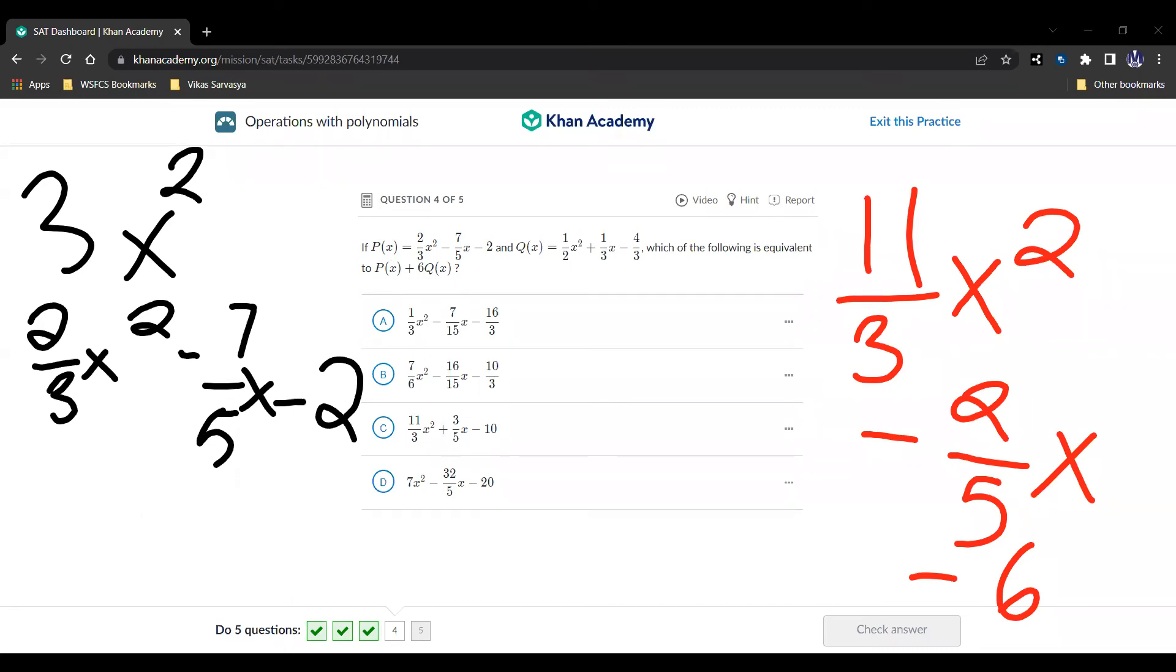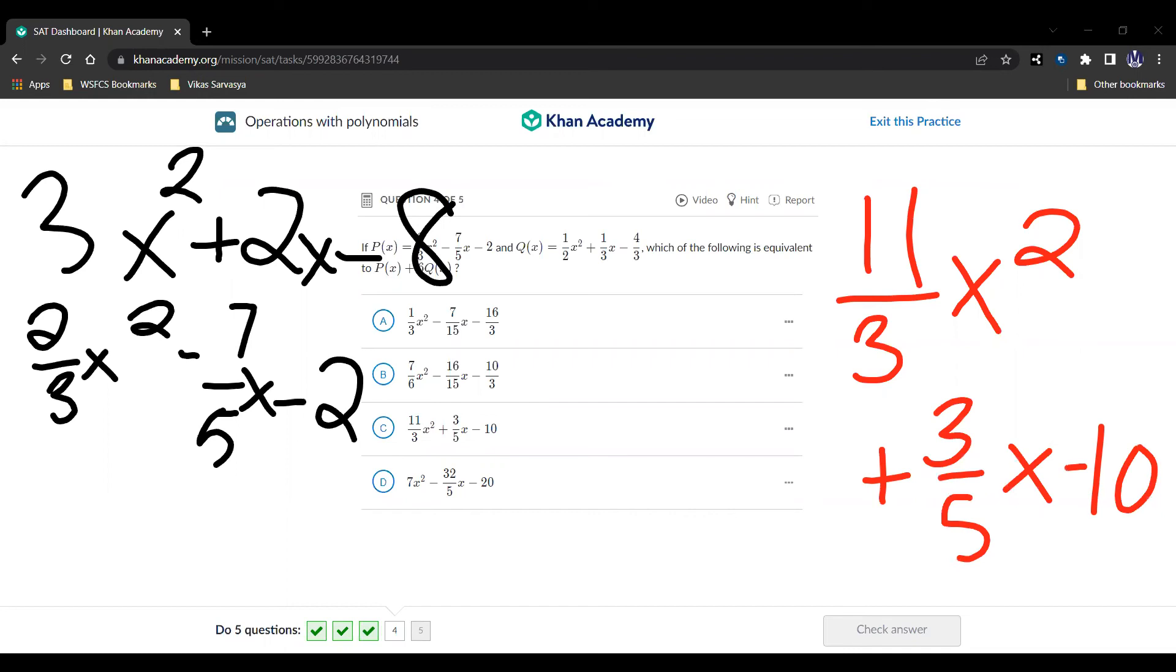Multiply by 6 becomes plus 2x. This equals minus 8. The challenge of these functions here, this part and this part, are going to be 3x squared plus 2x minus 8. This is going to be the answer choice.